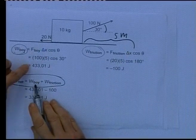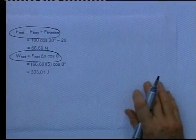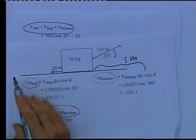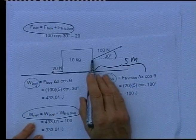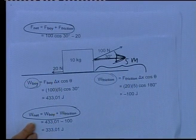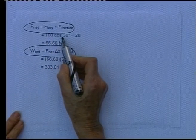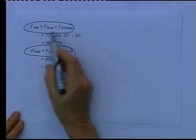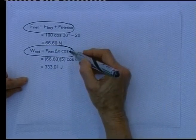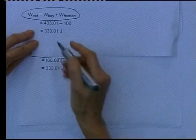So the net work done is 433.01 + (−100) = 333.01 joules. The other method: the net force uses only the horizontal component of the applied force. F_net = 100·cos 30 − 20 = 66.60 N. Then net work = 66.60 × 5 × cos 0 = 333 joules — exactly the same answer.